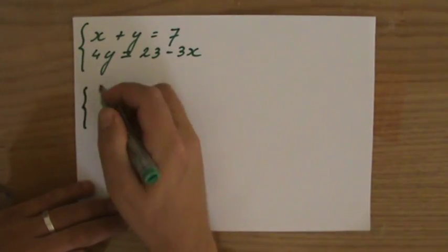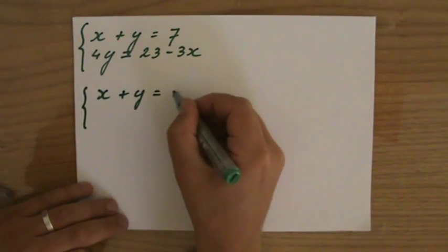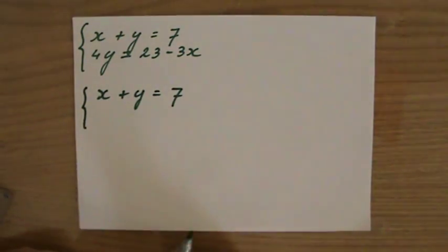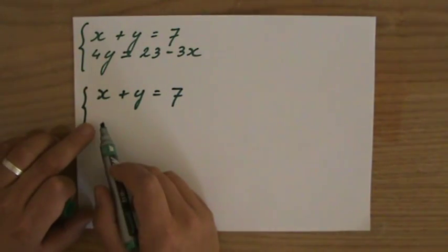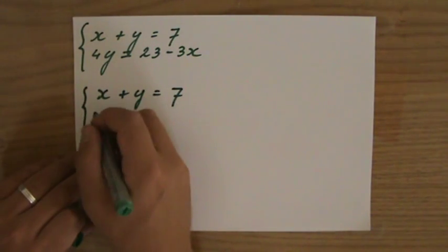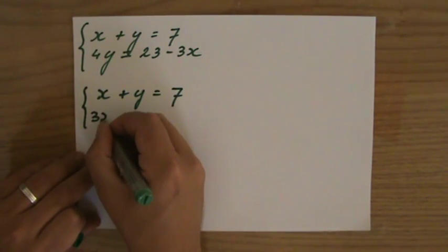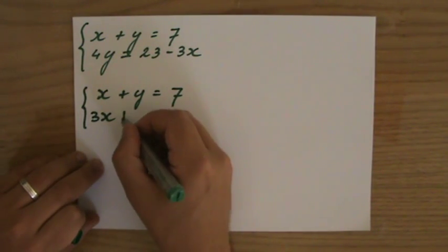Now the top one, x plus y equals 7, I leave it as it is. Make sure that the second equation follows the same order, so I need to have my x first. So the minus 3x, and here it is going to be a positive 3x. I hope you see what I've just done.